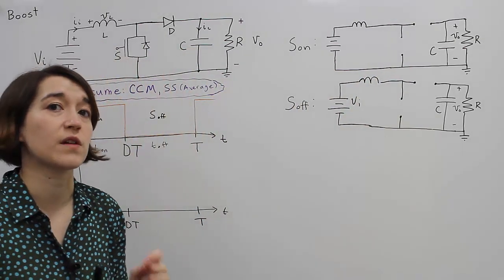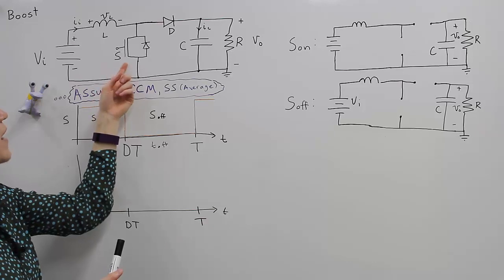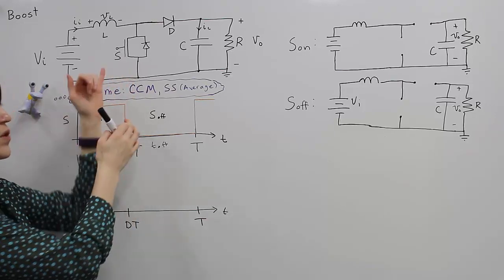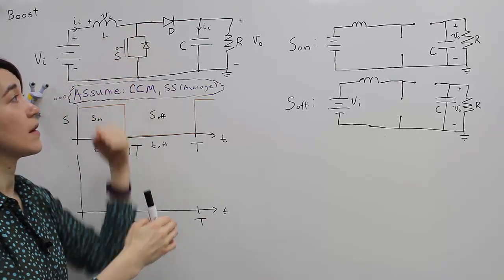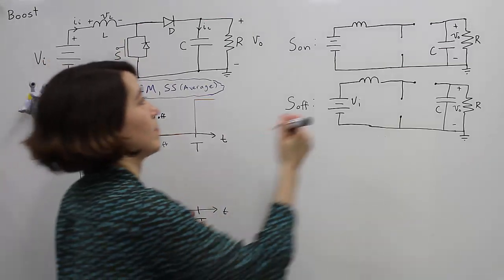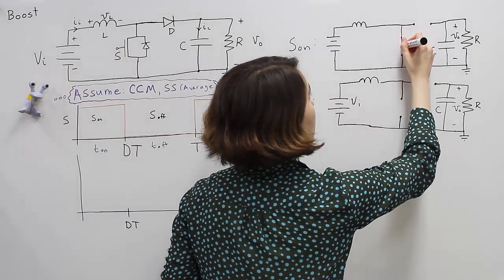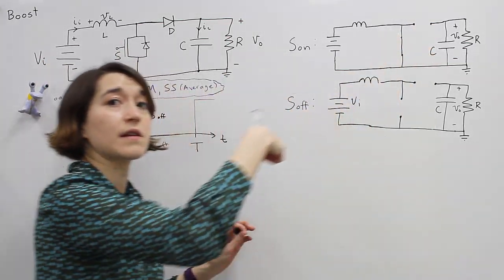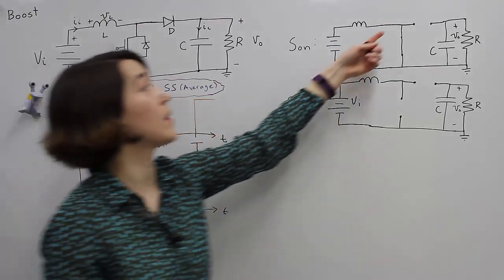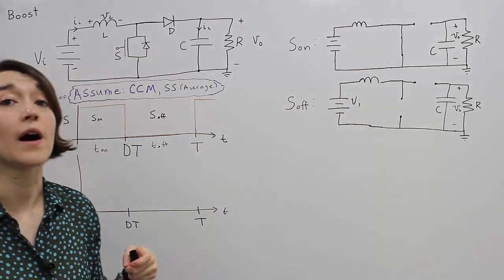We just have to figure out which switches are on. And when we have our active switch, this switch is being turned on so this is short. Switch is on, closed. So we are pulling this down to ground. So this node then becomes ground during S on.